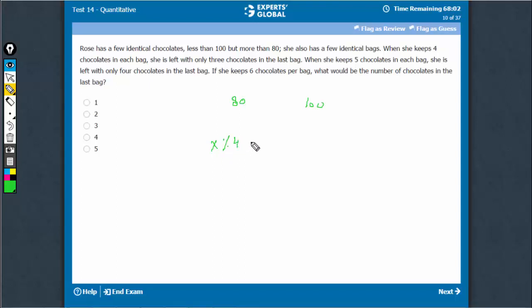So x when divided by 4 gives you 3 remainder. When she keeps 5, she is left with 4. So x with 5 gives you 4 remainder.